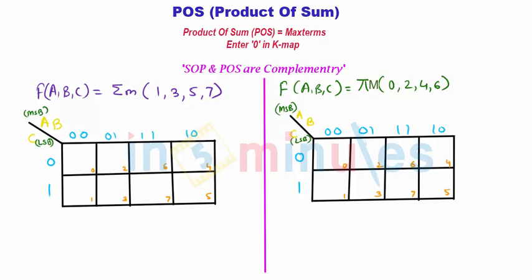For a three input combination of a function ABC, let's say this is an expression for sum of products, that is summation of M1,3,5,7. So it's a three bit function, so there will be total seven combinations starting from zero to seven.